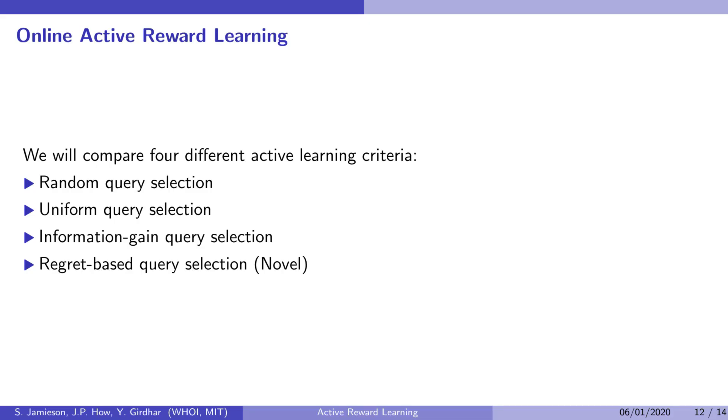Our next contribution was in helping the robot decide what to ask, which is an active learning problem. We compared different active learning criteria based on the amount of reward they helped the robot to collect in the simulations we just saw, as well as by how accurately they helped the robot to learn the scientist's reward model.